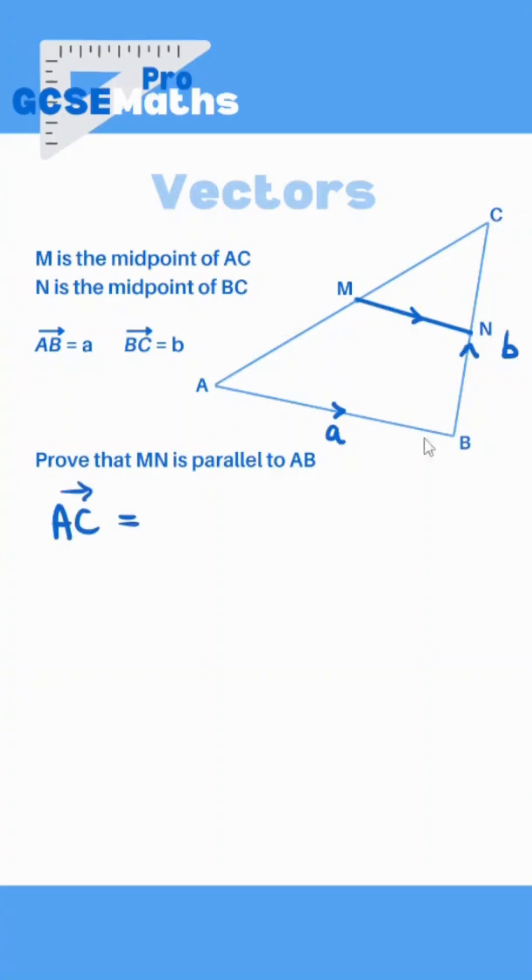AC would be going along to B so that's a and then up to C plus b. Now MC is exactly half of AC because it's the midpoint, so that would be a half of a plus b.